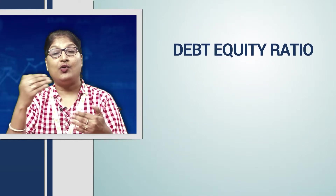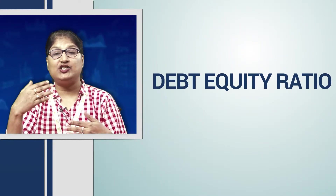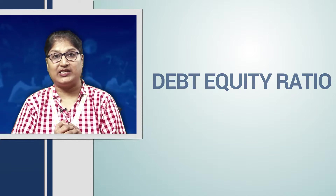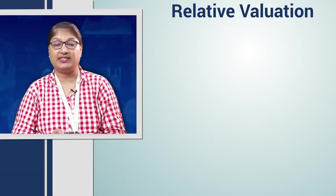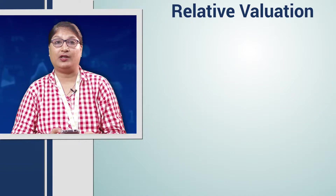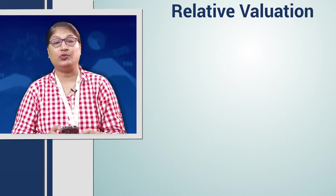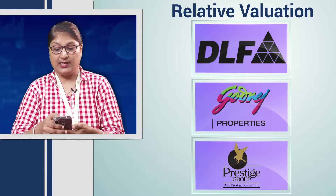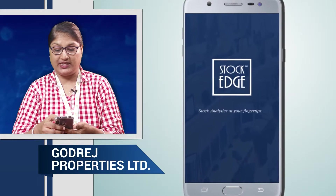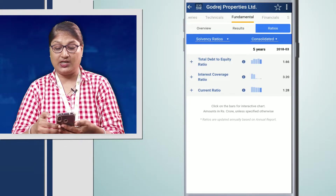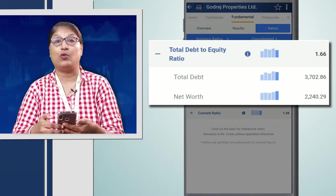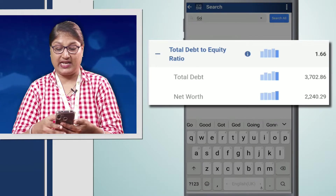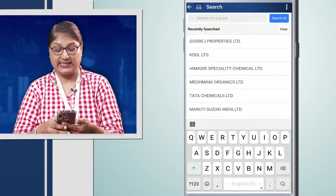From this debt equity ratio, we have to understand which companies are good and which are not good in terms of debt equity ratio. We will check out three companies in the real estate segment to find out which has the lowest debt to equity ratio. Today we will check out DLF, Godrej Properties, and Prestige Real Estates. When we check out Godrej Properties, the total debt to equity ratio of this company is 1.66, which is above the prescribed limit of 1.